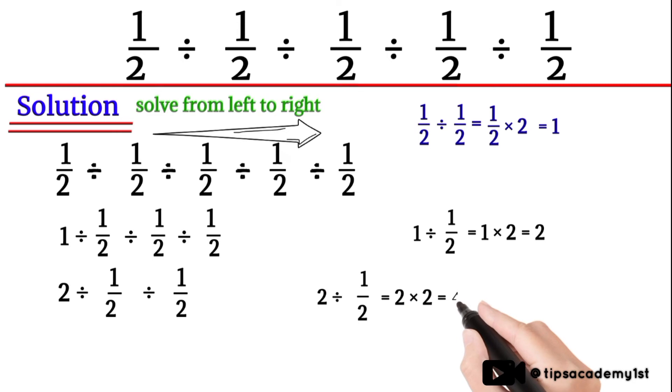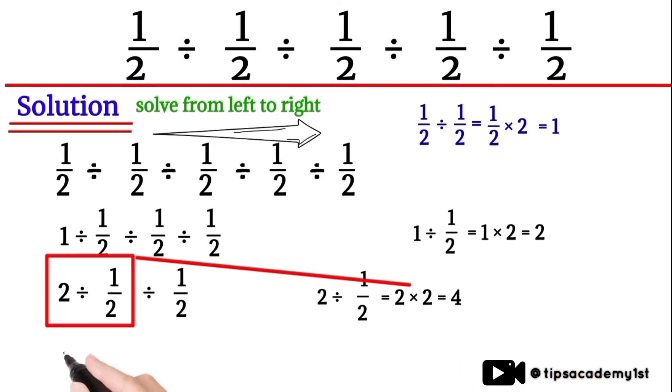Now we will again change the division into multiplication. Here 4 multiplied by 2, so its answer will be equal to 8.